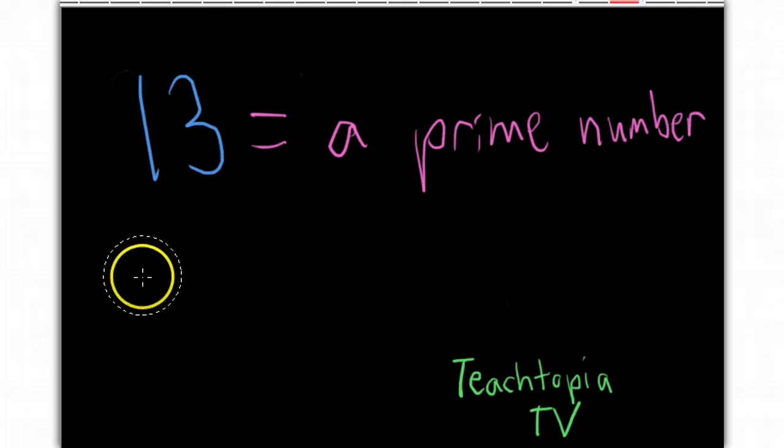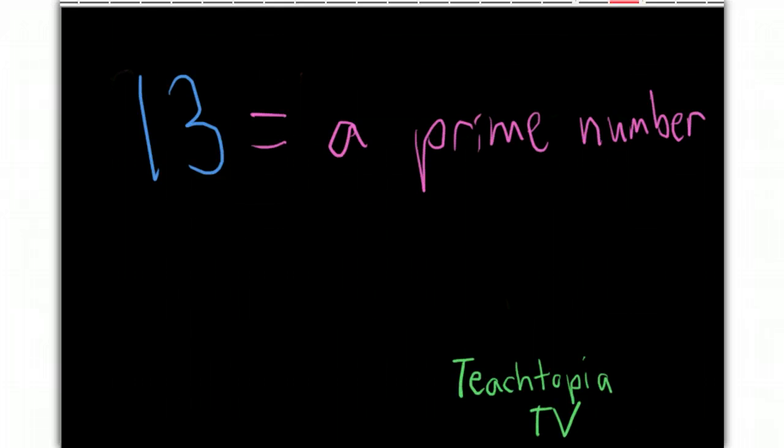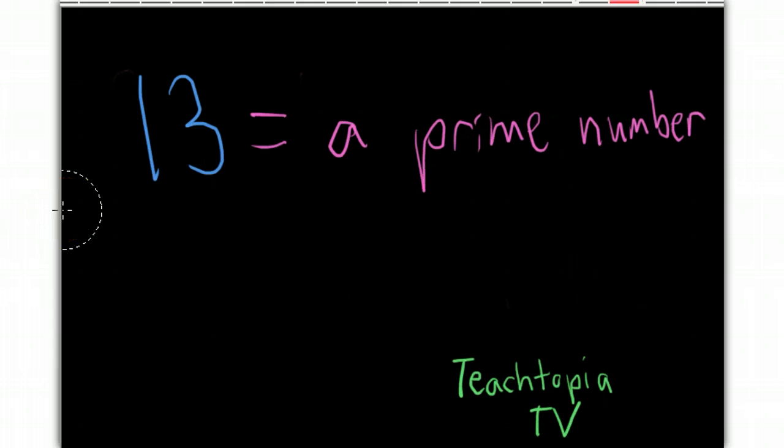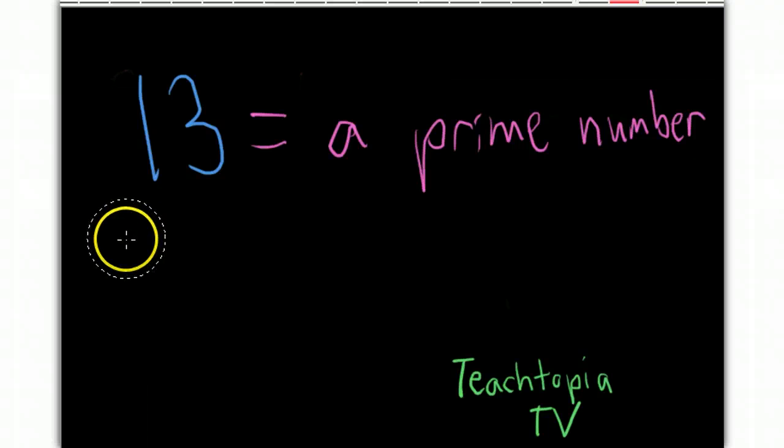Okay. So there are countless prime numbers, but the core thing you have to remember, or I shouldn't say countless, but there are many, many, many prime numbers. But the core thing you need to remember is that a prime number is only divisible by itself or 1.